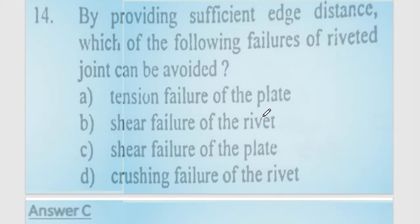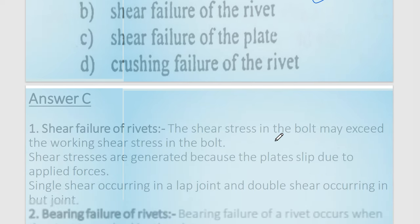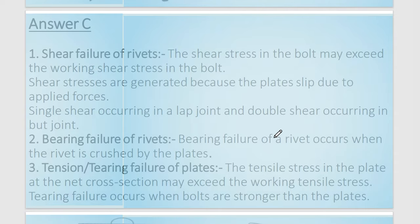Question number 14: by providing sufficient edge distance, which failure of the rivet joint can be avoided? The failures considered are: shear failure of the rivet, bearing failure of the rivet, tearing failure of the plate, and shear failure of the plate. By providing adequate edge distance, shear failure of the plate is avoided.